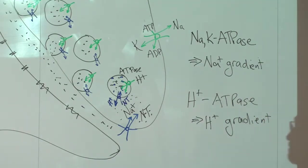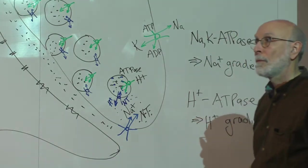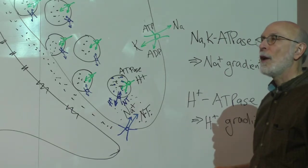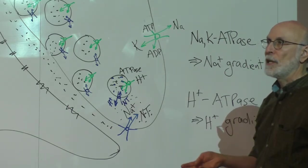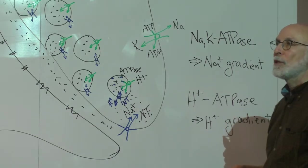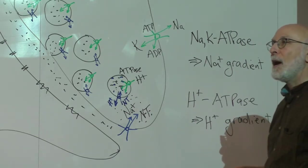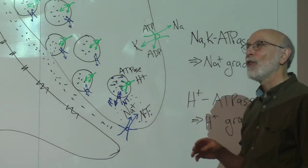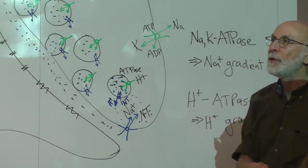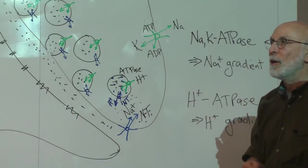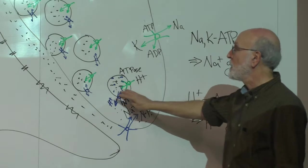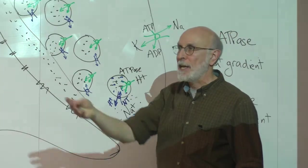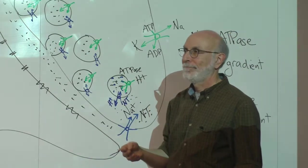Question: does one neuron release only one neurotransmitter? One neuron releases one type of neurotransmitter — and the 'one' is in quotes because sometimes they release two. But they are never an excitatory and an inhibitory neurotransmitter together. There can often be release of a primary neurotransmitter and a secondary neuromodulator.